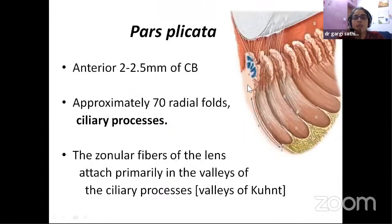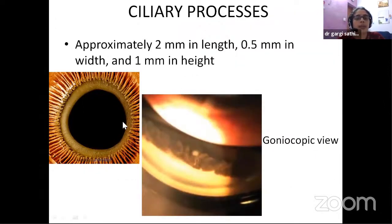Coming to pars plicata, it is the anterior 2 to 2.5 millimeters of the ciliary body thrown into radial folds called the ciliary processes — around 70 of them in each eye. The zonular fibers of the lens come and attach to the valley between these processes, called the valleys of Kunt. If you see from behind, you can see how much surface area has increased because of this arrangement. Each process is around 2 millimeters long, 1 millimeter in height, and 0.5 millimeters in width.